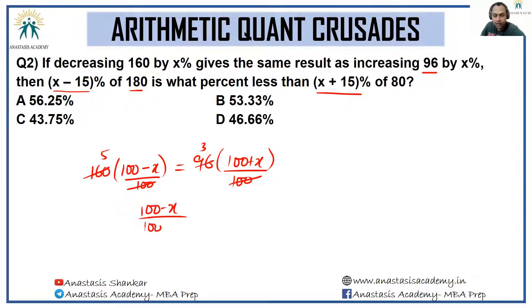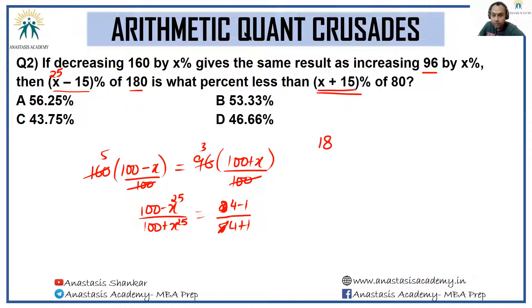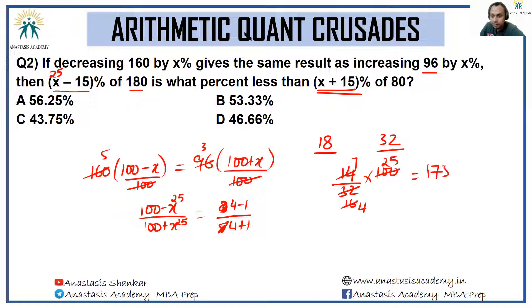Writing 3/5 as (4−1)/(4+1), we see 100 represents 4 units, so x represents 1 unit = 25. With x = 25, we compute x − 15% of 180 = 10% of 180 = 18, and x + 15% of 80 = 40% of 80 = 32. The difference is 14, and 14/32 × 100 = 175/4 = 43.75%. Only option C fits with the 0.75 remainder.